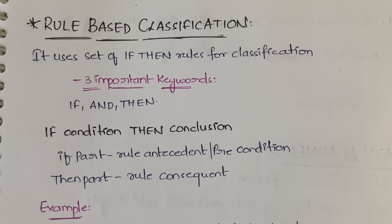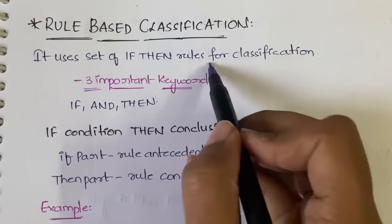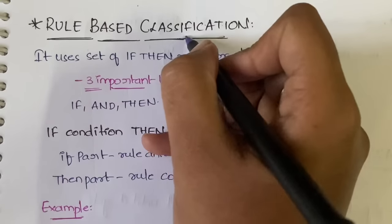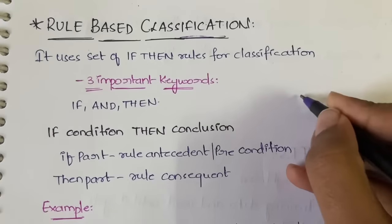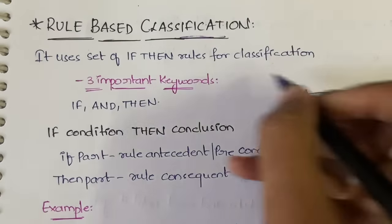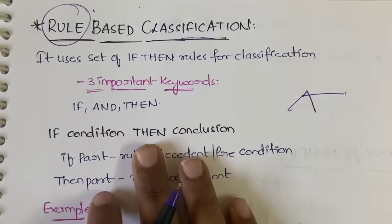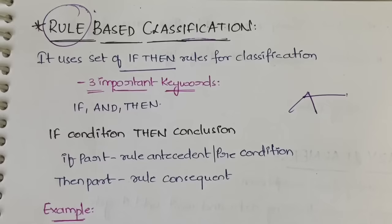Rule-based classification uses a set of if-then rules for classification. It is nothing but classifying the data into different categories based on rules — that is called rule-based classification, and the rules used are if-then rules.